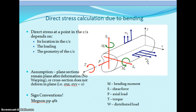Sigma x means the bending stress in the x direction, which is the axial stress in the x direction. It must equal M — the bending moment in the y direction — divided by the moment of inertia about the yy axis, multiplied by z. Here, z is the distance from the centroid to the outermost fiber, or wherever you want to find out the bending stress.